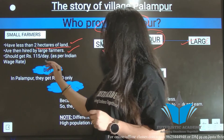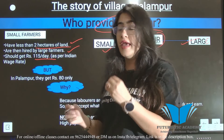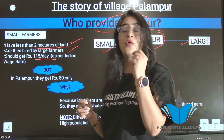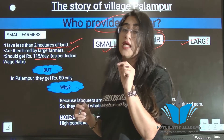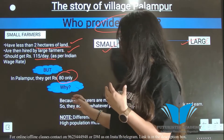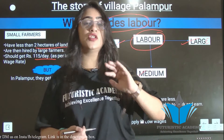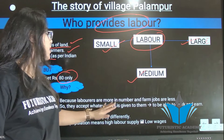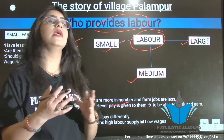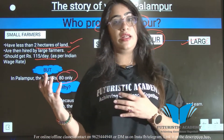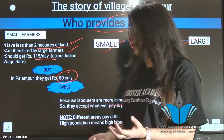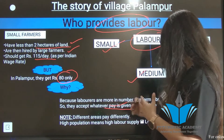According to the Indian minimum wage rate, every farmer should get 115 rupees per day. However, in Palampur, workers were getting only 80 rupees per day. This was because labor supply was more in number and jobs were fewer, so workers were easily replaceable and had to accept whatever pay was offered just to secure employment.